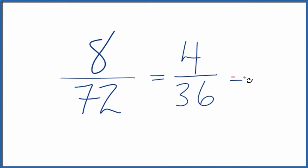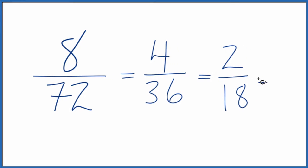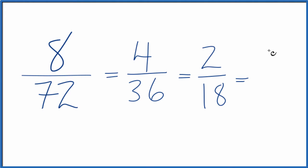We can cut this in half again as well. 4 divided by 2 is 2. 36 divided by 2 is 18. One more time, we end up with 1/9, which is what we got before.